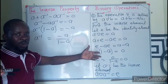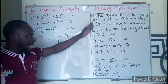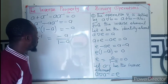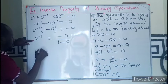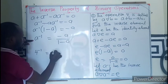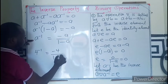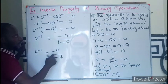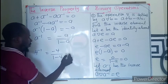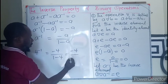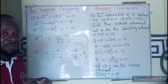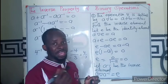A question can also ask you to find the inverse of a specific number, like four. You simply substitute a = 4 into the final equation: inverse of 4 = −4 / (1 − 4) = −4 / −3 = 4/3. If you are asked to find the inverse of a given number, you only substitute into the final inverse equation.